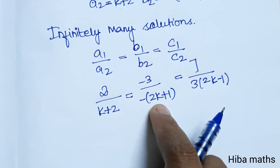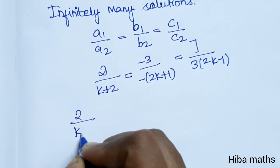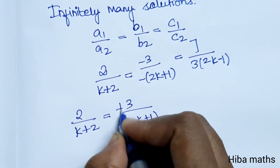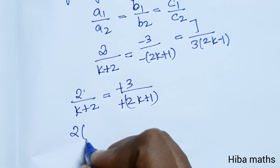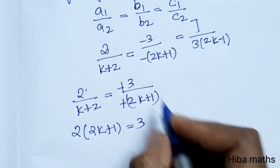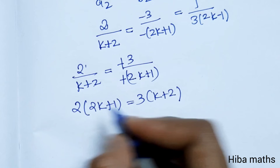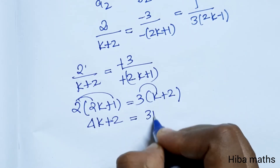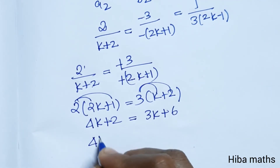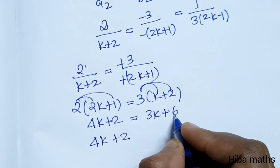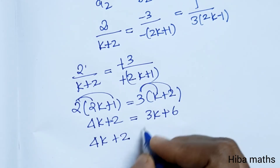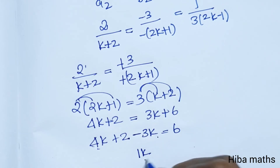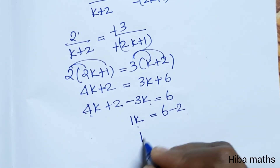Solving: 2 is equal to minus 3 by minus 2k plus 1. Cross-multiplying: 2k plus 1 is equal to 3 into k plus 2, which gives 2k plus 1 equals 3k plus 6. Therefore, 4k plus 2 equals 3k plus 6, so 4k minus 3k equals 6 minus 2, giving k equals 4.